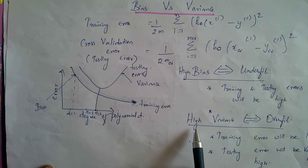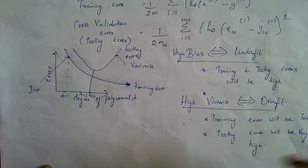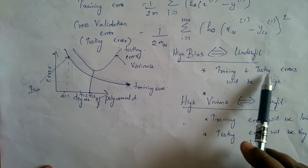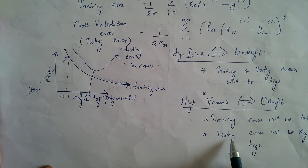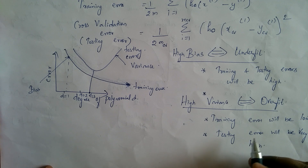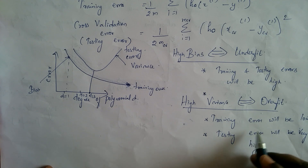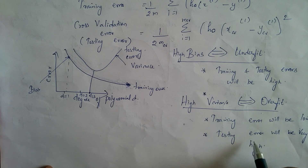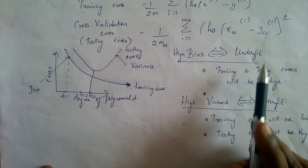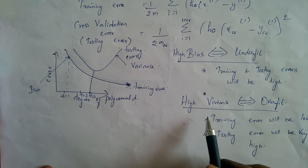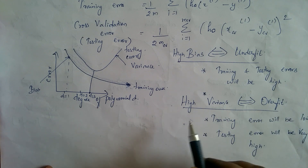In summary: high bias is underfit — we need to increase attributes. High variance is overfit — training error will be low but testing error will be very high, because the attributes fitted to training data may not be present in test inputs. High bias is equivalent to an underfit model and high variance is equivalent to an overfit model.